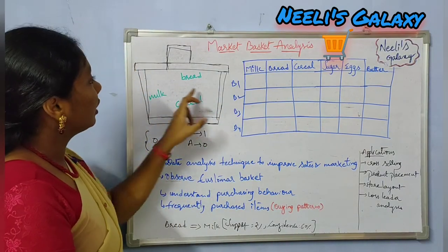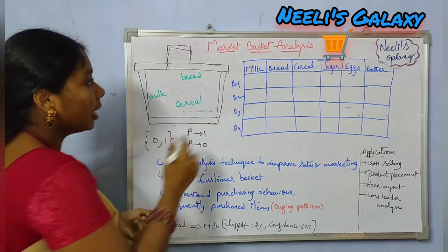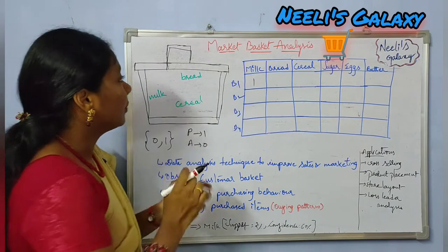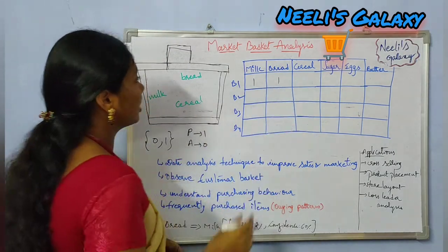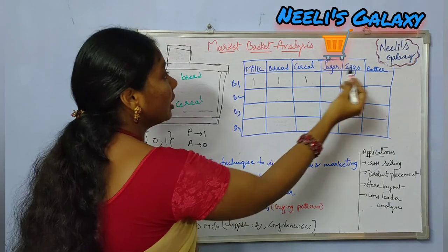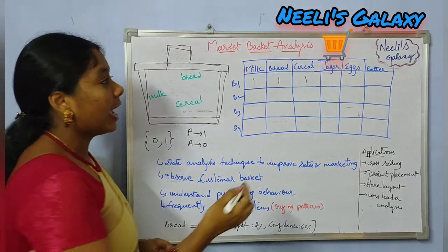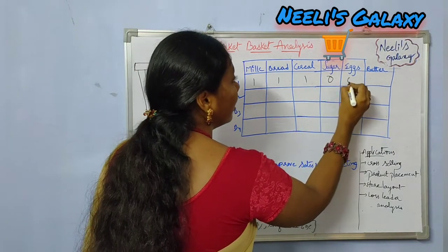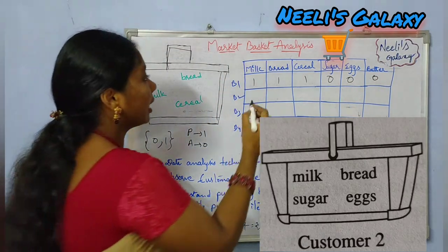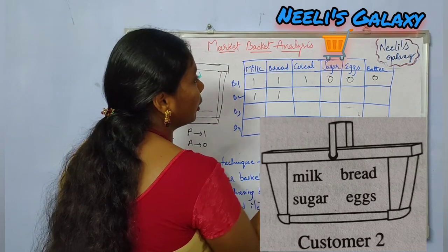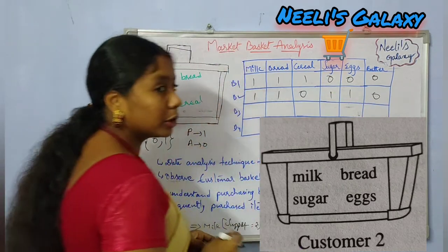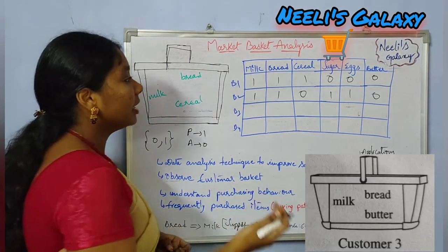Consider basket one. In basket one, milk is present — we indicate that with 1. Bread is also present — we indicate 1. Butter is also 1. There is no sugar, eggs, or butter — their absence is indicated with 0. Consider the second basket: milk is present, bread is present, sugar is present, eggs are present — the remaining items are indicated with 0.